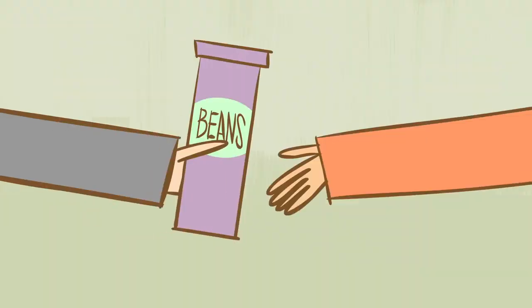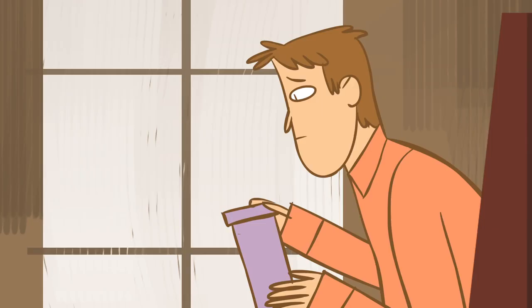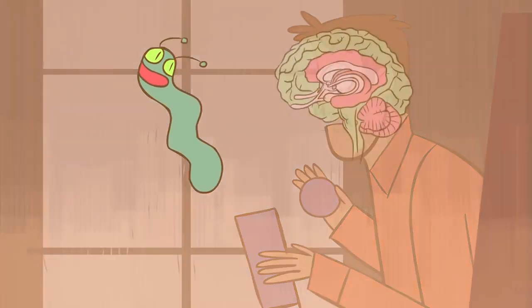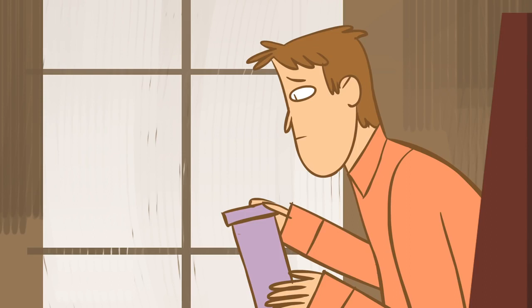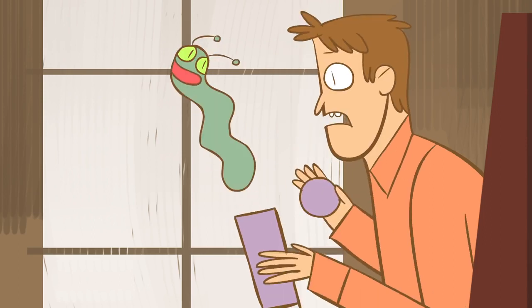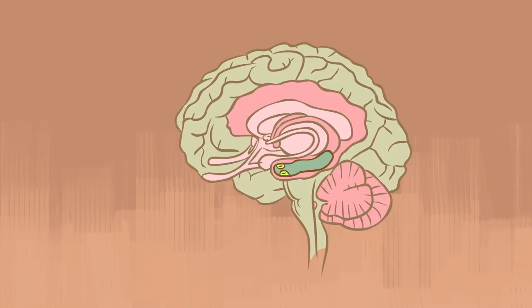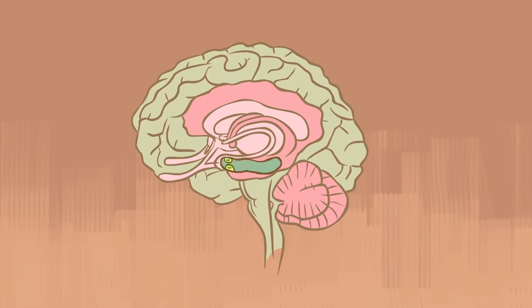We now know that memory formation involves several steps. After immediate sensory data is temporarily transcribed by neurons in the cortex, it travels to the hippocampus, where special proteins work to strengthen the cortical-synaptic connections. If the experience was strong enough, or we recall it periodically in the first few days, the hippocampus then transfers the memory back to the cortex for permanent storage.